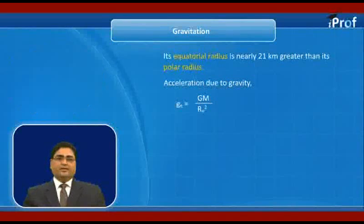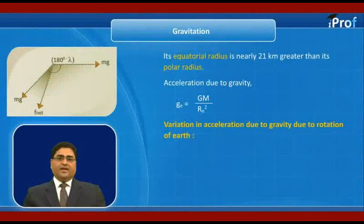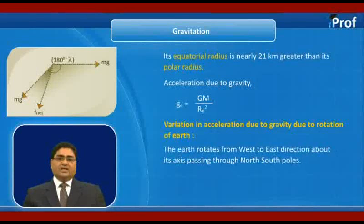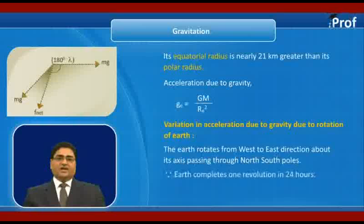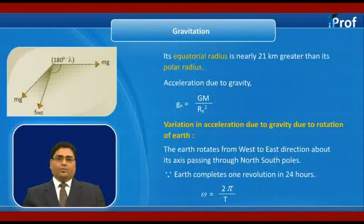Now let us study variation in acceleration due to gravity due to rotation of earth. The earth rotates from west to east direction about its axis passing through the north-south pole. Since earth completes one revolution in 24 hours, omega is equal to 2π upon T.